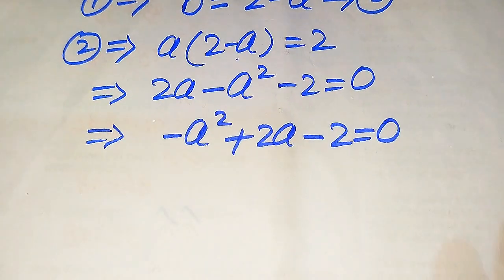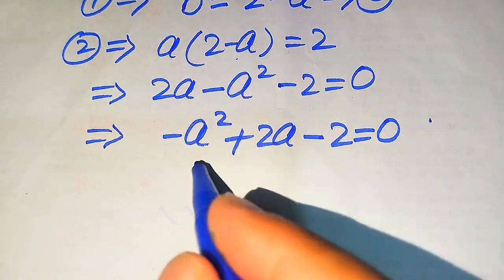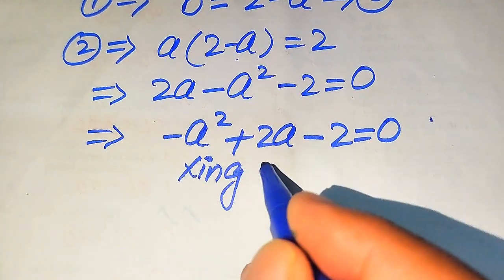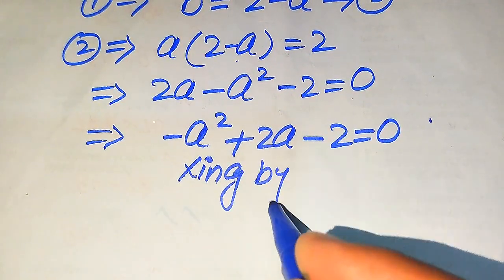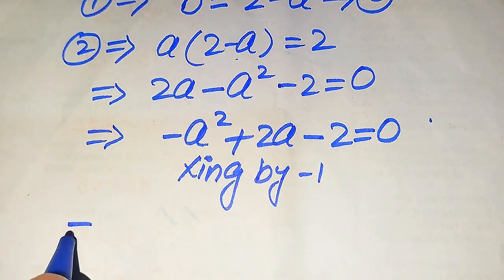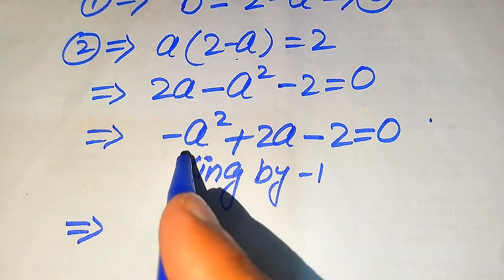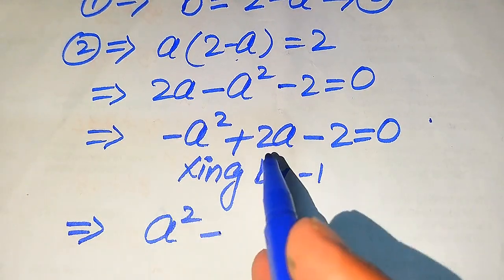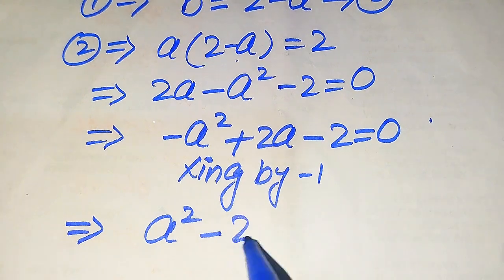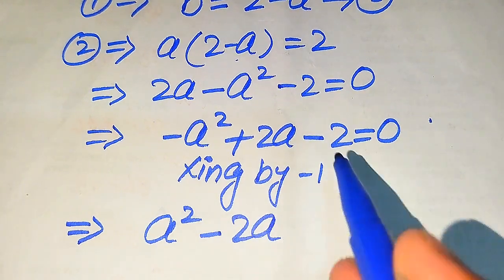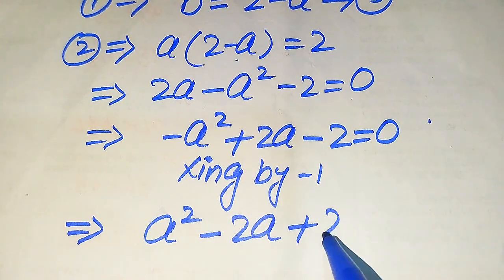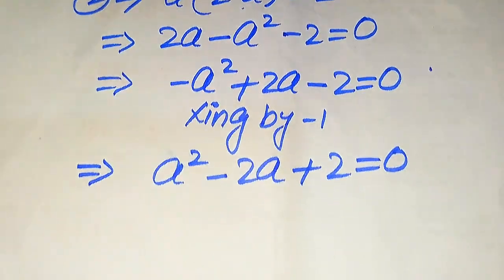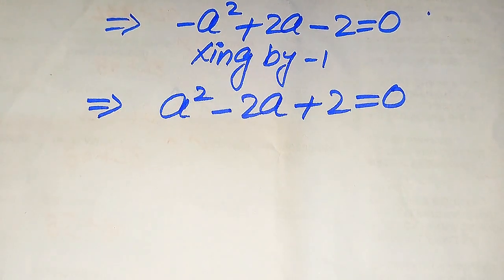Now we multiply each term by minus 1, so minus a squared becomes plus a squared, plus 2a becomes minus 2a, and minus 2 becomes plus 2, giving us the quadratic equation a squared minus 2a plus 2 equals 0.